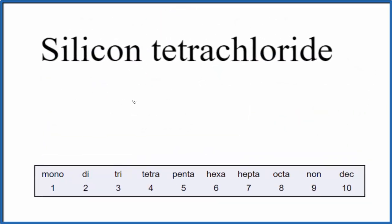For silicon, the element symbol is Si, and there's nothing written before it, so we know there's just one of those. Chloride, that's chlorine Cl. We have tetra. When we look at our table here, tetra means four, so we'll have four chlorine atoms.